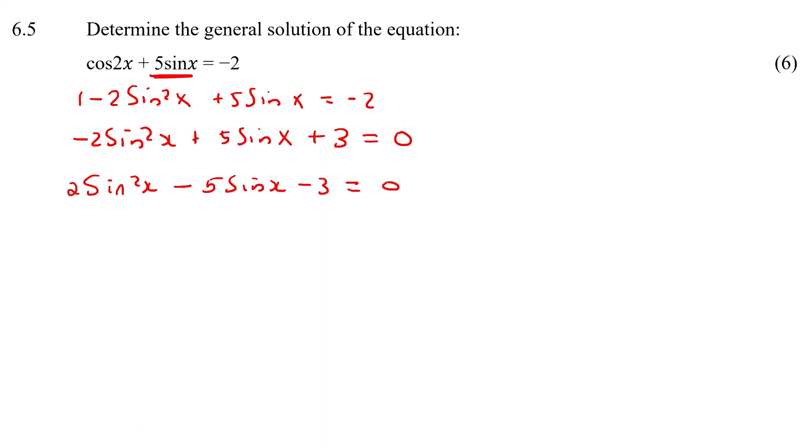I would then use the quadratic formula where this would be your a, this is your b, and this is your c. So x equals to negative b plus minus square root b squared minus 4ac over 2a.